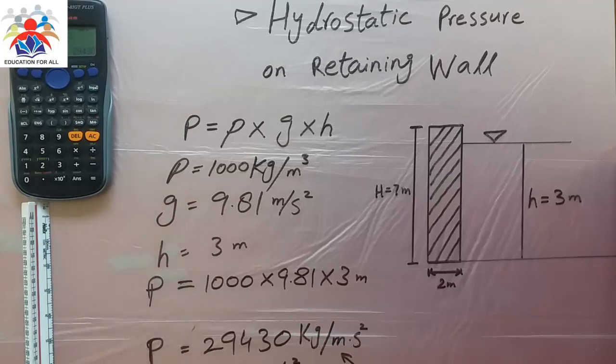That's how you calculate hydrostatic pressure on retaining wall. You can have different type of retaining wall. It could be trapezoidal, it could be square, in our case we have rectangle retaining wall.